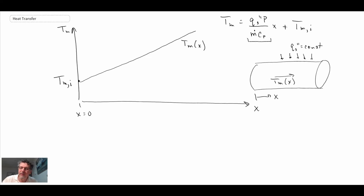Another piece of information that we're interested in is what about the wall temperature? What is happening with the wall temperature? So T_W as a function of x, what is going on there? And we can shed some light on that by looking at Fourier's law.